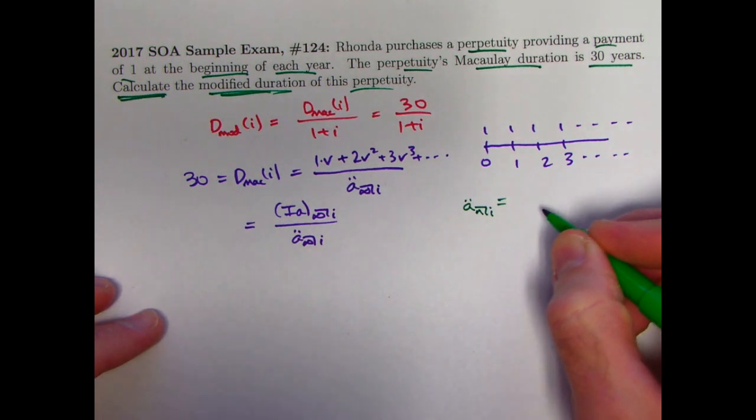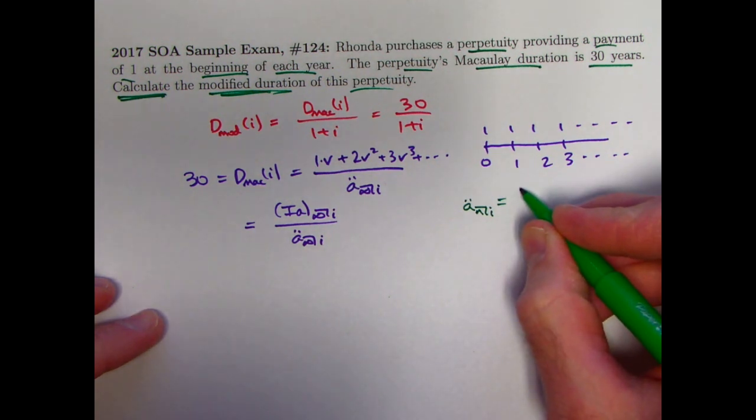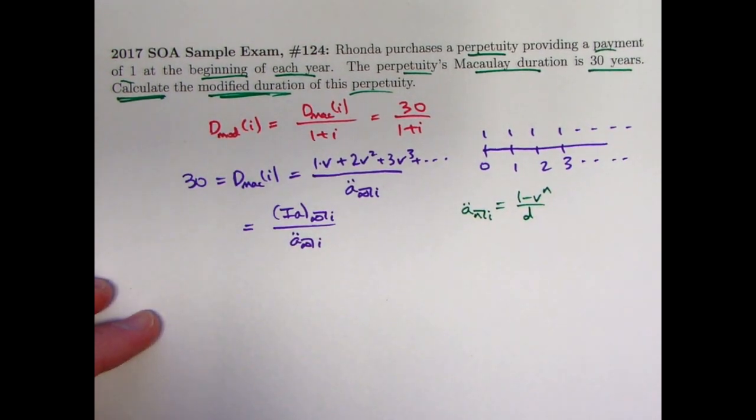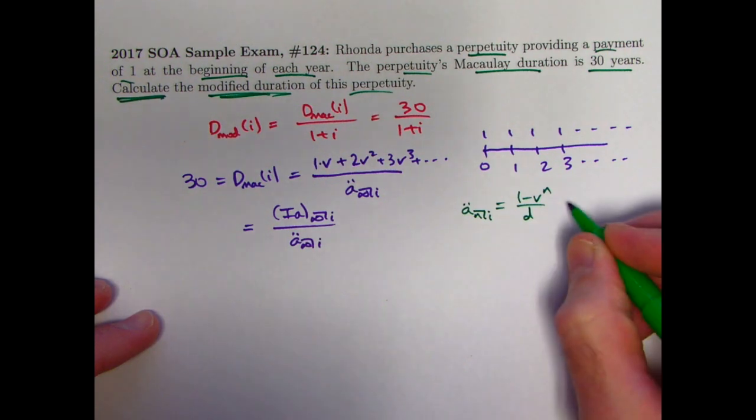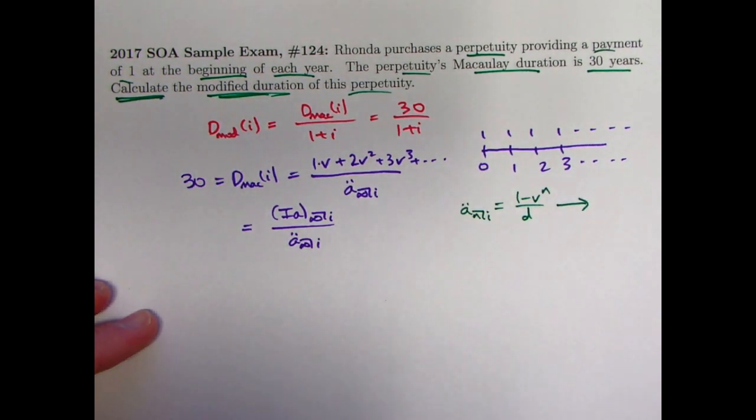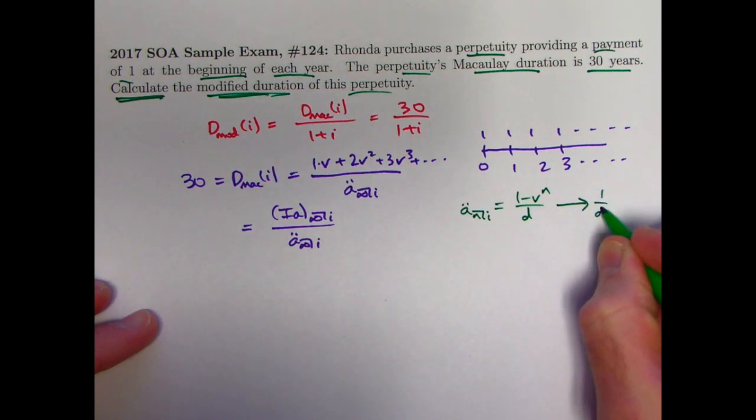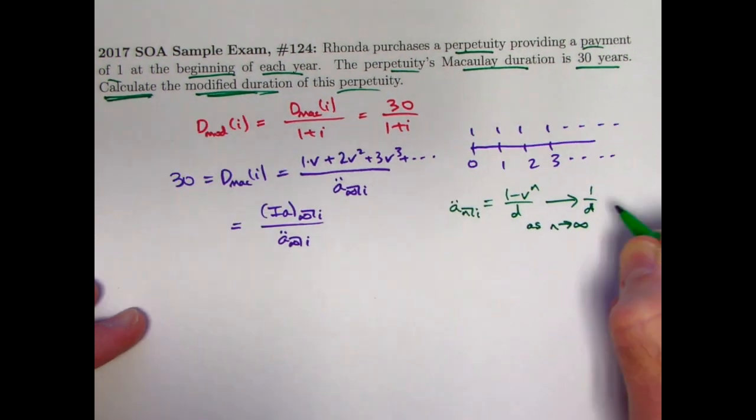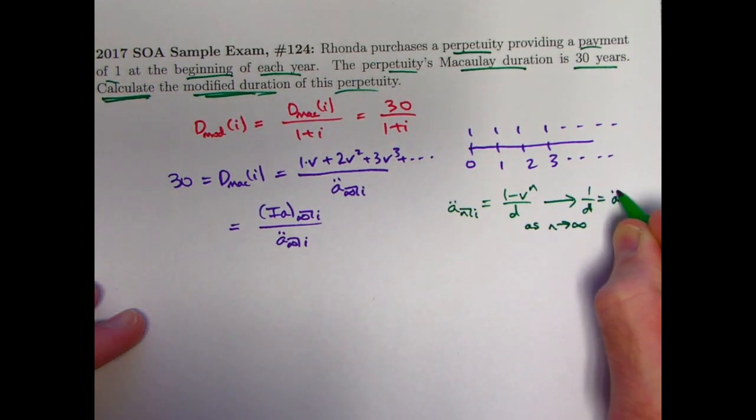For a n double dot, the formula is 1 minus V to the n over D, where D is the discount rate, of course related to i, the interest rate. And as n goes to infinity, since V is going to be between 0 and 1, this is going to approach 1 over D, as n goes to infinity, and that will then be the value of a double dot infinity.